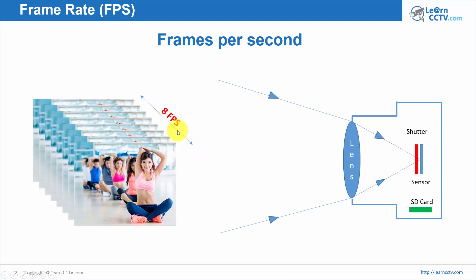The camera is going to record this 8 frames every single second in an SD card, or it's going to record 8 frames every single second in an NVR, your network video recorder, or a DVR if you are using analog cameras. I have here 8 frames every single second.